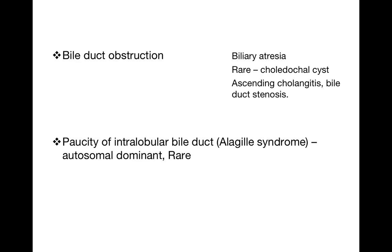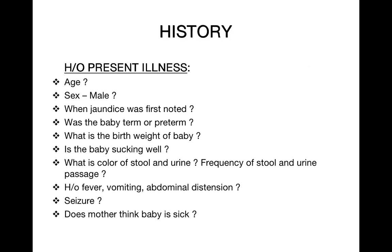Regarding history taking in neonatal jaundice: always ask the age and sex of the baby — if male, G6PD deficiency may be the cause. Ask when jaundice was first noted — in the first day of life, or after. Ask if the baby is term or preterm — preterm babies have higher chances of neonatal jaundice than term babies.